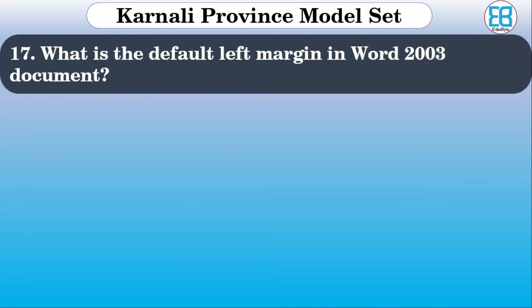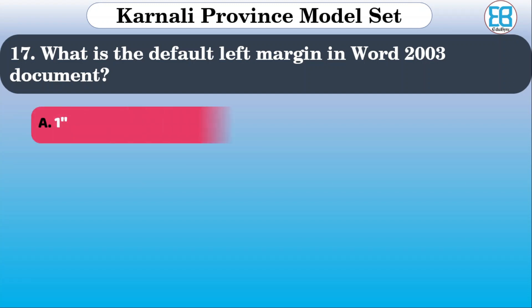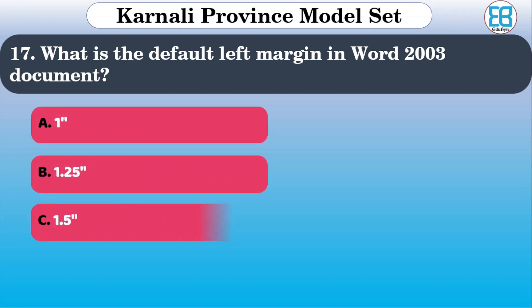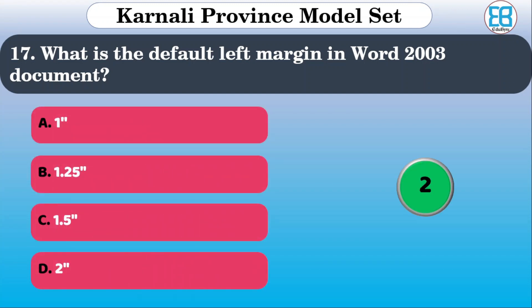What is the default margin in MS Word 2003? The options are 1, 1.25, 1.5, and 2 inches. The correct option is 1.25 inches — that is the default left margin.